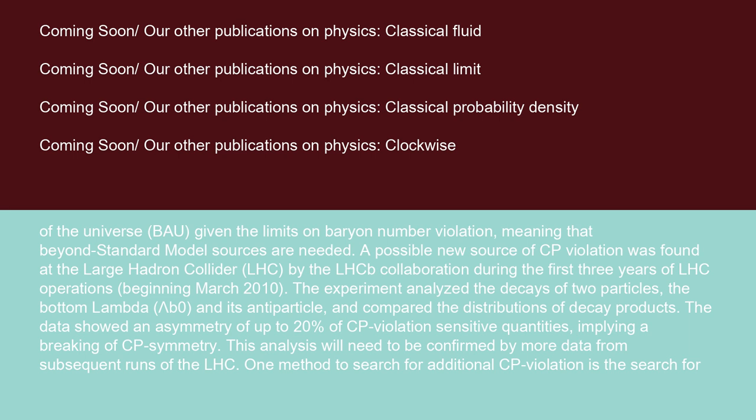A possible new source of CP violation was found at the Large Hadron Collider (LHC) by the LHCb collaboration during the first three years of LHC operations, beginning March 2010. The experiment analyzed the decays of two particles, the bottom lambda (Λb0) and its antiparticle, and compared the distributions of decay products. The data showed an asymmetry of up to 20% of CP violation-sensitive quantities, implying a breaking of CP symmetry. This analysis will need to be confirmed by more data from subsequent runs of the LHC.